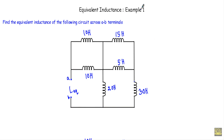In this video I will show you a circuit in which we have to find the equivalent inductance. This is example number one — find the equivalent inductance of the following circuit across A and B terminals. These are our A and B terminals.